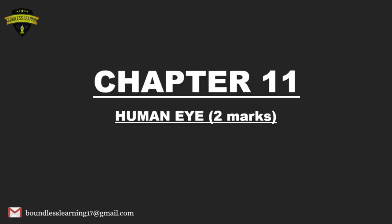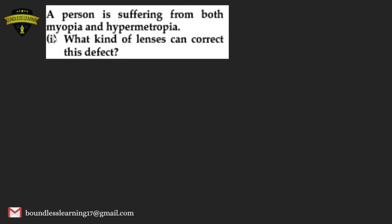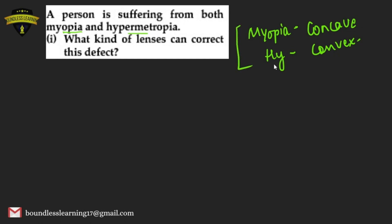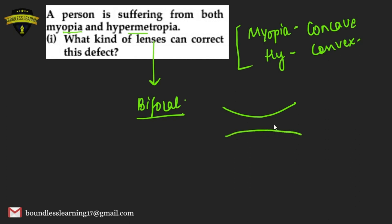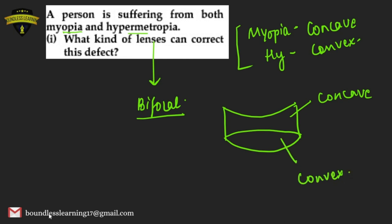We now move to the chapter on the Human Eye, which has two important topics: anatomy of the human eye and its defects. First question: a person suffering from both myopia and hypermetropia uses bifocal lenses, which combine a concave lens (for myopia) and a convex lens (for hypermetropia) to correct both defects.